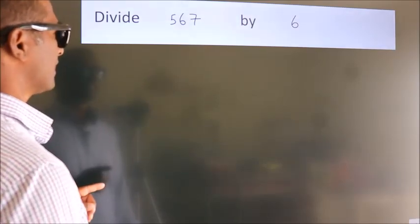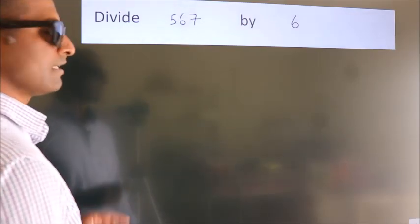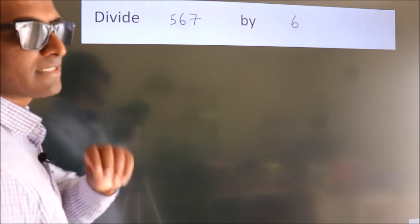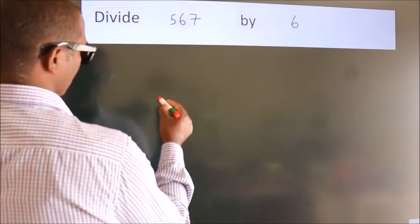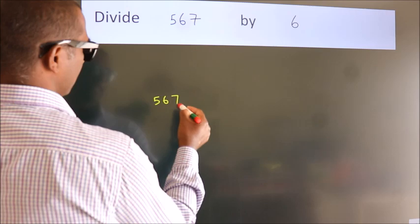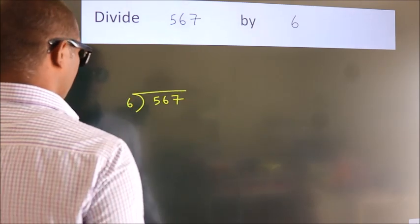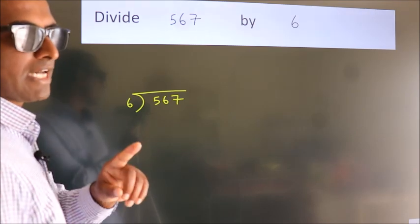Divide 567 by 6. To do this division, we should frame it in this way: 567 here, 6 here. This is your step 1.